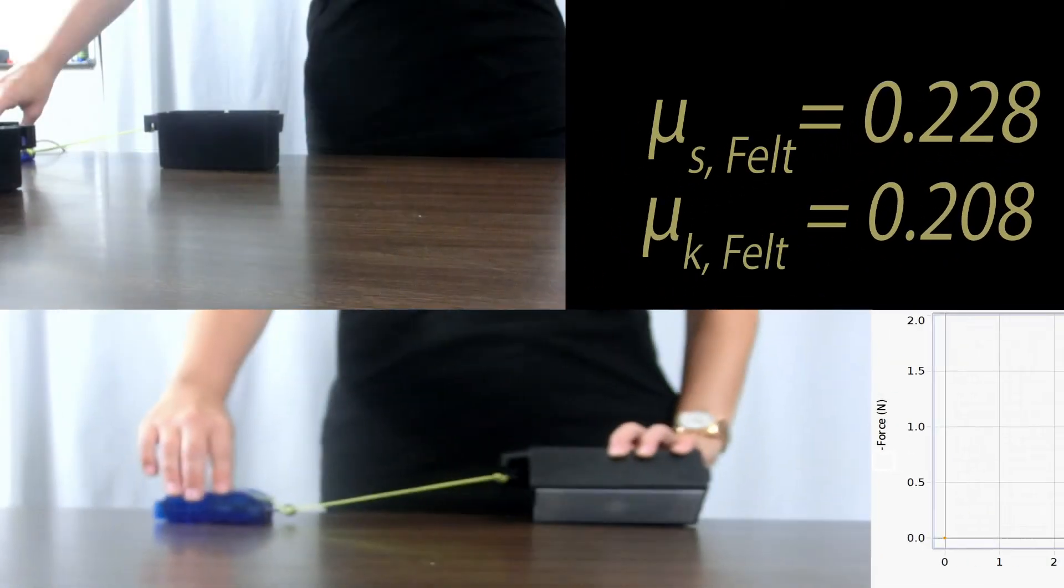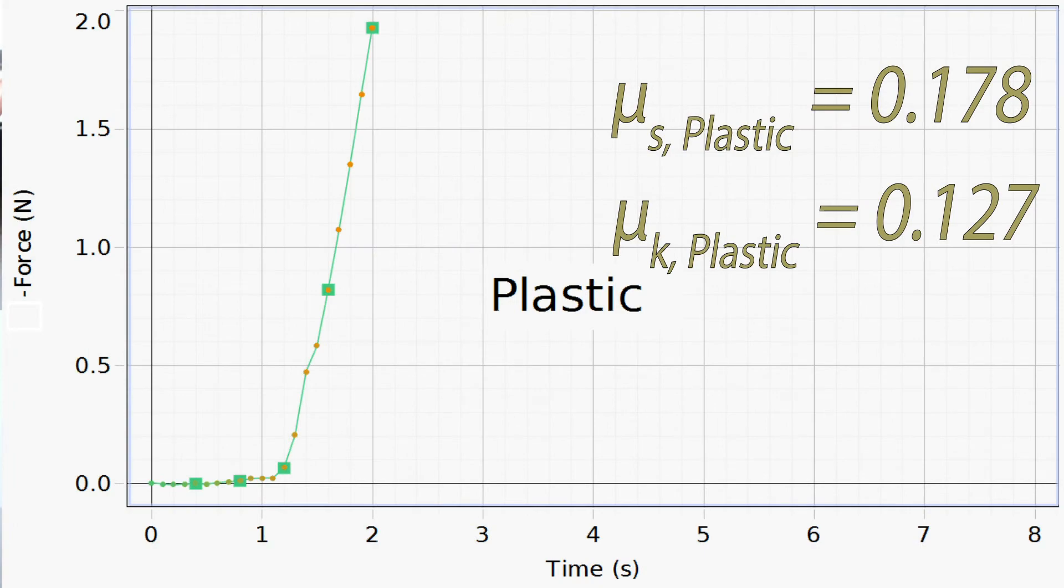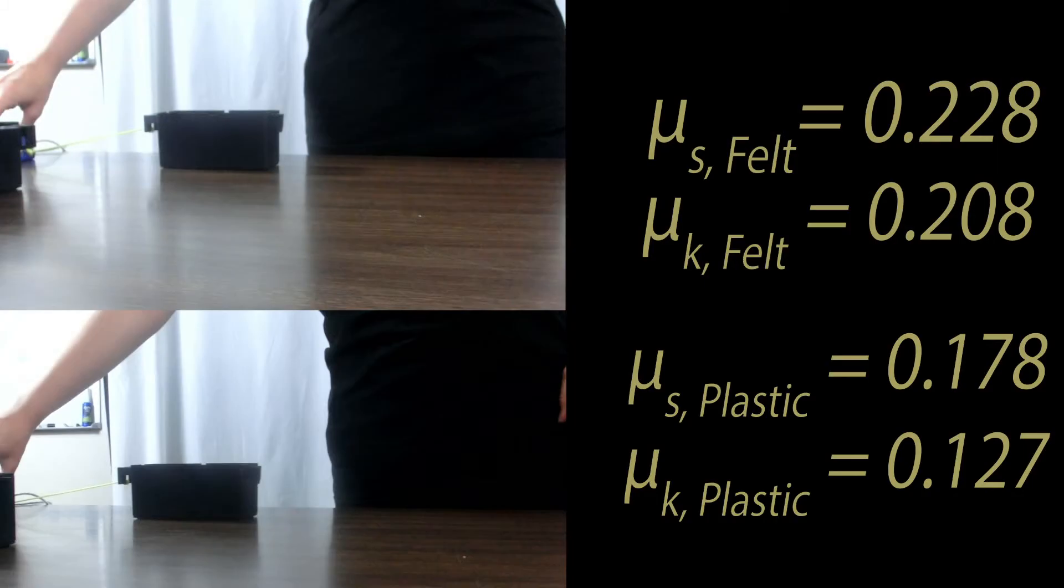For the plastic, the static coefficient of friction is 0.178, and the kinetic coefficient of friction is 0.127.